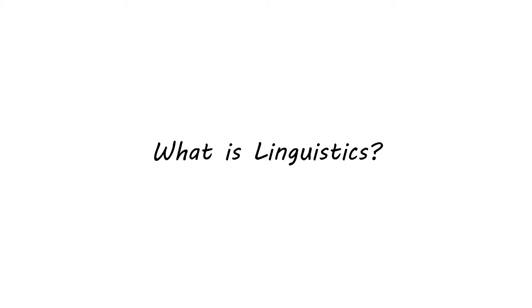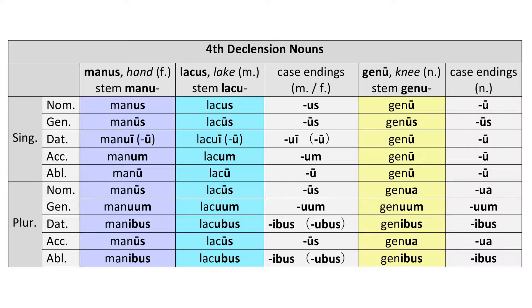So if you haven't taken a linguistics class, you might think of linguistics as making tables like this. This is a declension chart for Latin, and it sorts out a language so that you can figure out how the word looks in different contexts. This is one of the things that linguists do — they analyze and find patterns in language.